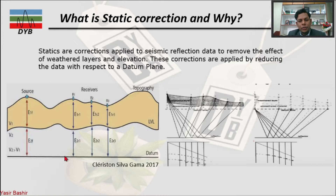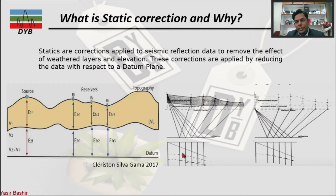Here is another example. Let's say your source is here and your receivers are positioned along the line. You can see your first trace from this reflector, then second, third, fourth, fifth — they appear up and down. But once you have your datum plane and bring all your data with respect to it, the hyperbolic moveout becomes very consistent.